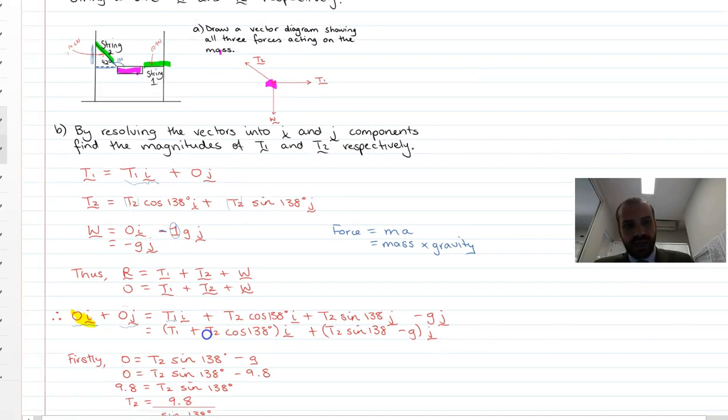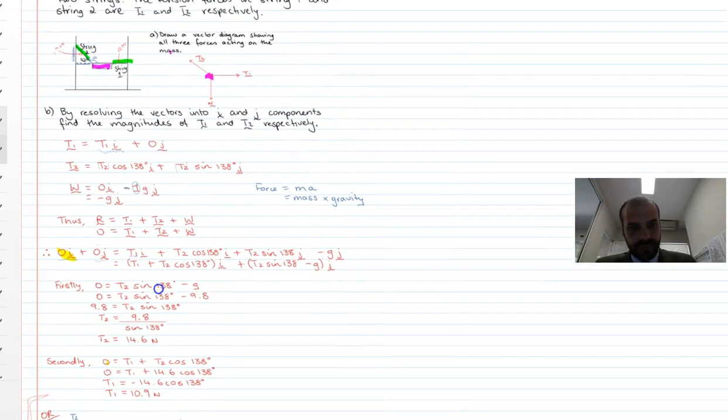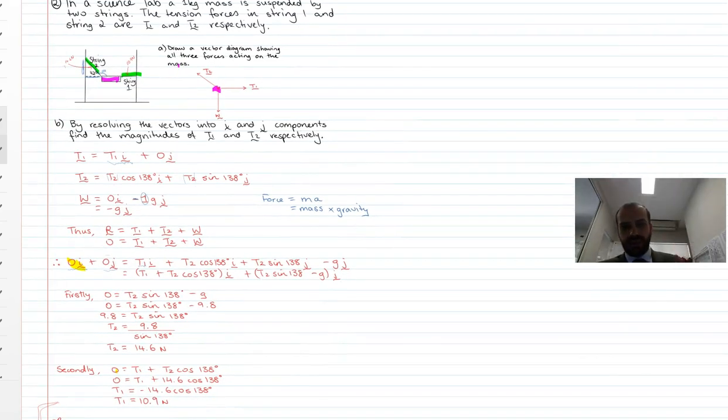I'll just sort of zoom out on that a little bit. Alright. We only need to go about that far. Make sure that you've looked at that. Make sure that you understand what's happening there. Basically, the thing's not moving. We can take the three vectors and add them together to equal zero. And then it's a matter of rearranging for the i components, rearranging for the j components.